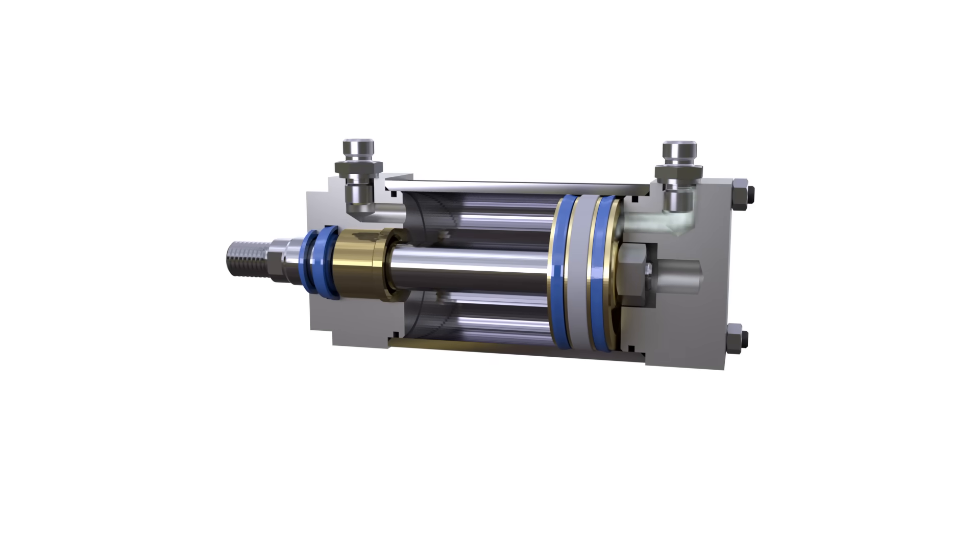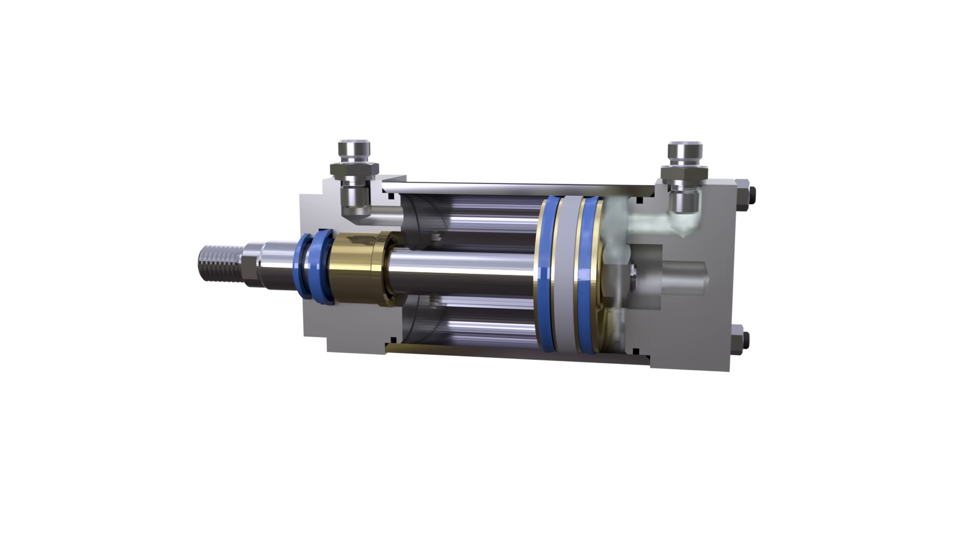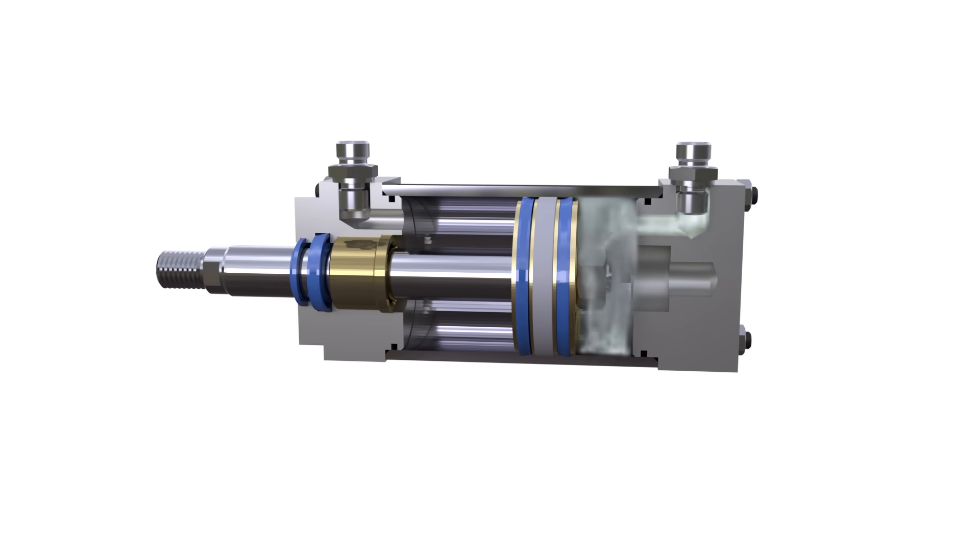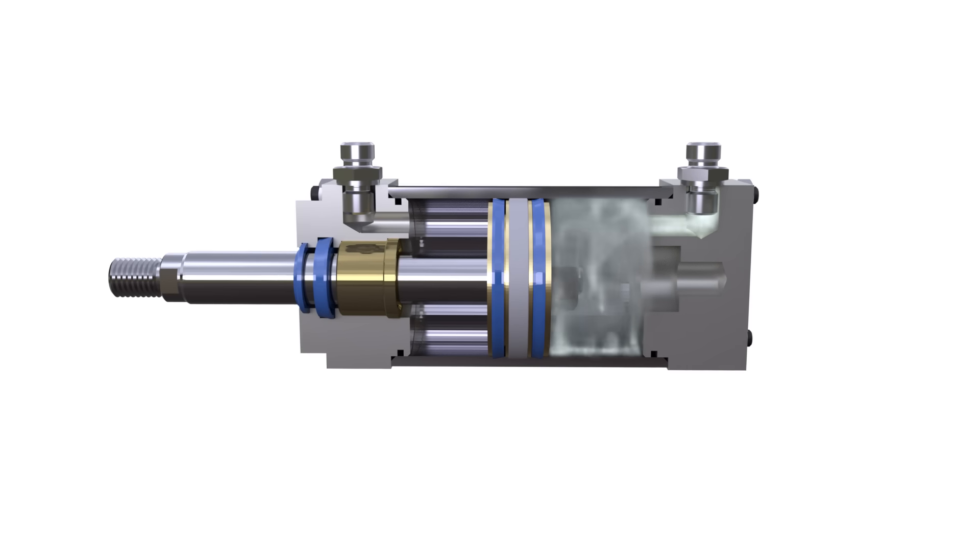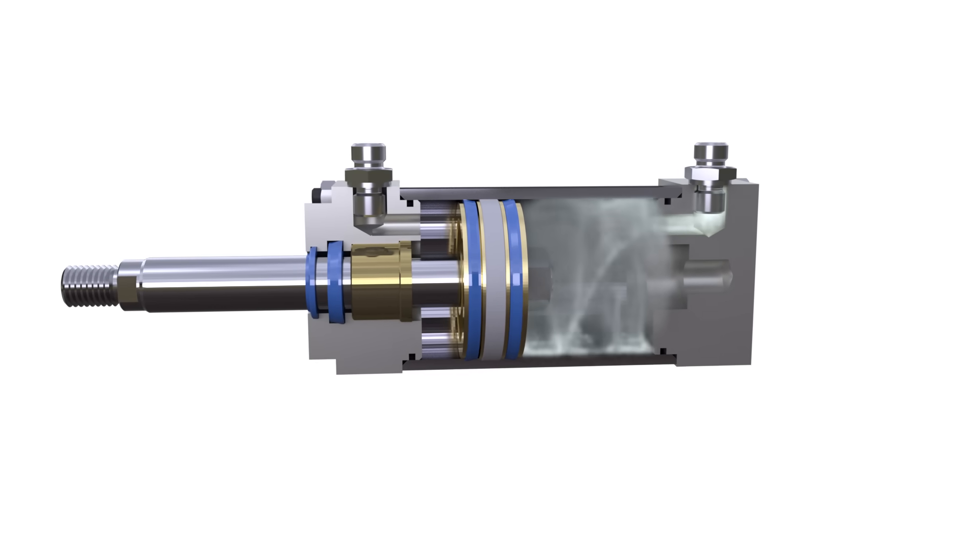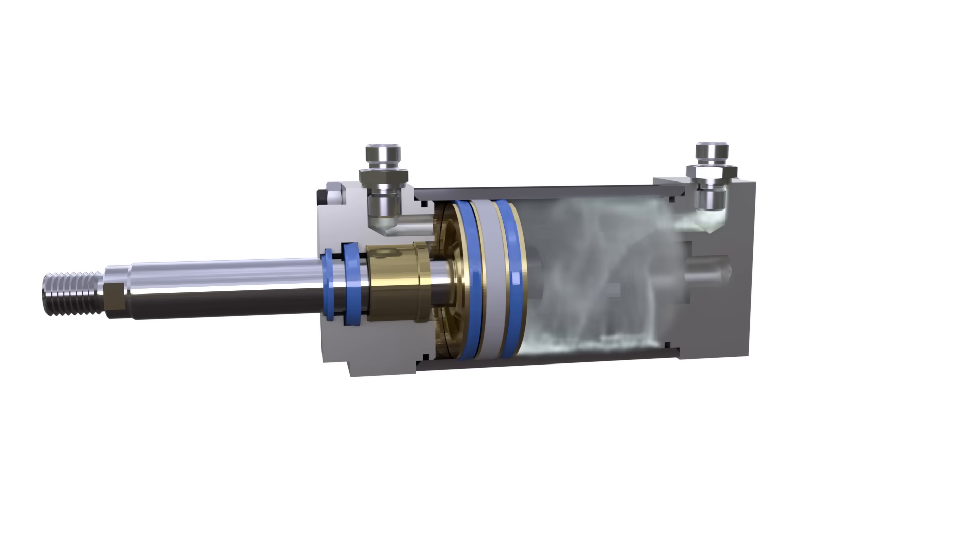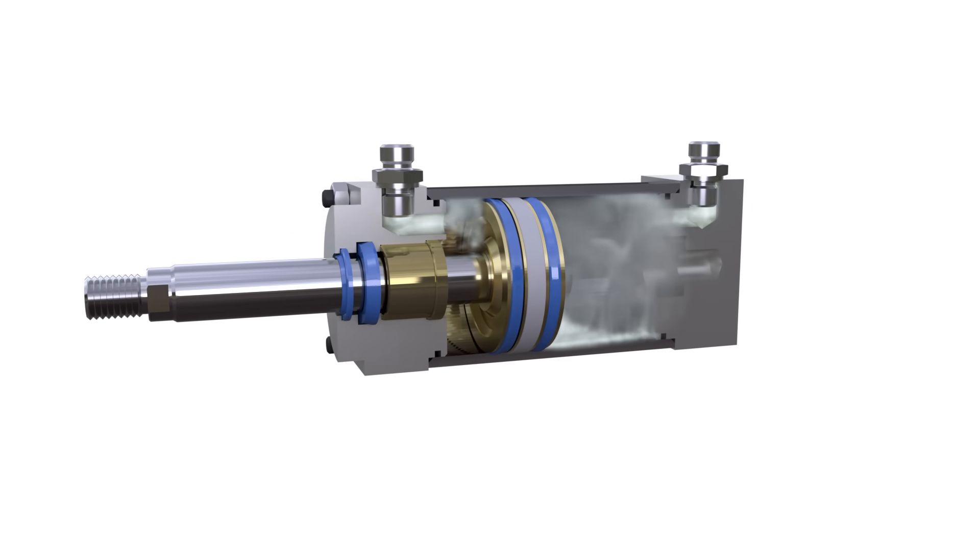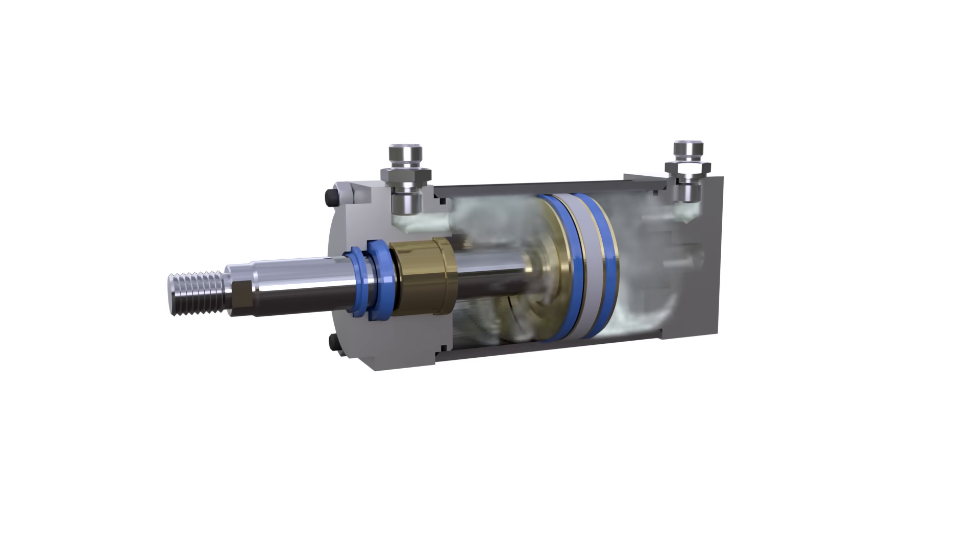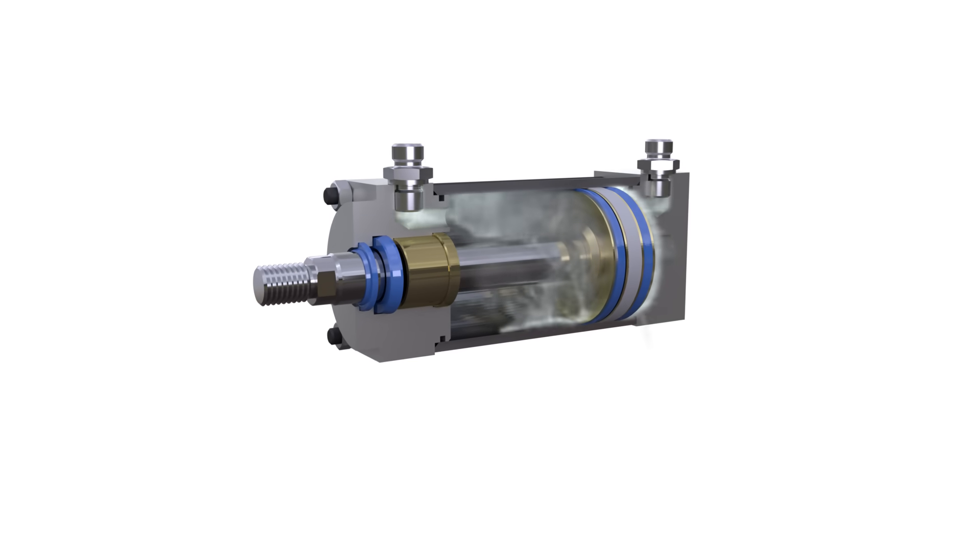In double-acting pneumatic cylinders, air affects the piston from both sides. When introducing air into the piston cavity, air from the rod cavity is sent to the atmosphere, thus making the rod extend. To retract the rod, you need to supply compressed air to the rod cavity and connect the piston cavity to the atmosphere.